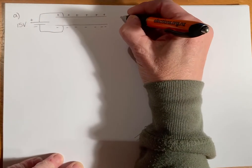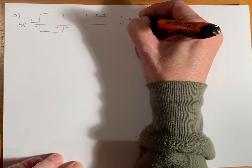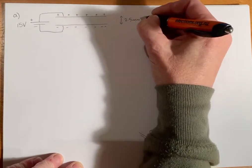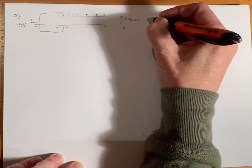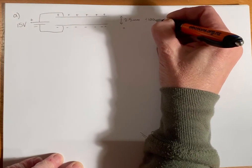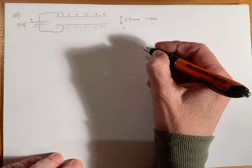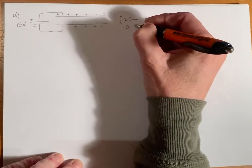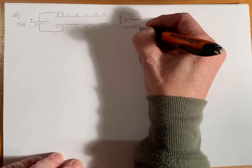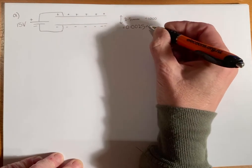Then we know the distance between them is 2.5 millimeters, but we have to have that in meters. So we're going to divide by a thousand because there are a thousand millimeters in the meter, and we should get 0.0025 meters.